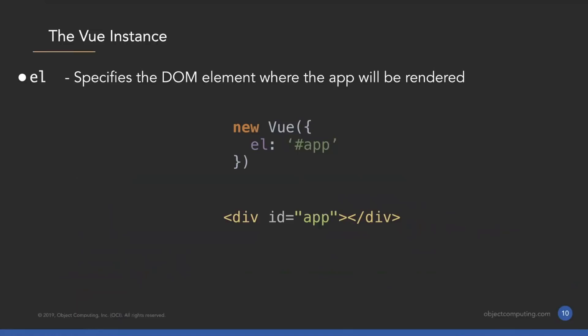I'll highlight a few keys passed into the Vue instance. 'el', which is for element, is pretty important — you need it to create a Vue application and render it somewhere on an HTML page. The purpose of the element key is to specify a DOM element, typically a div, where you want your app to render. Normally you'll only do this once if you're writing a single page app, because you only want to start rendering to the HTML page in one place. You'll have Vue components rendered inside that element, but you don't render to multiple elements — so typically you only do this for your top-level Vue instance.